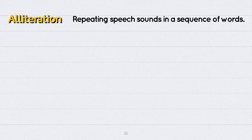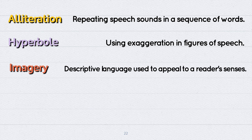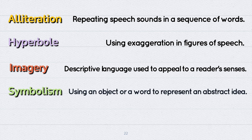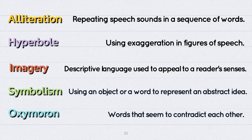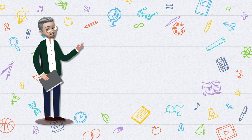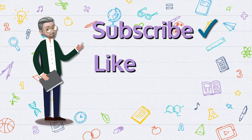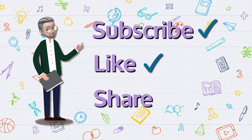So let's recap. Alliteration: repeating speech sounds in a sequence of words. Hyperbole: using exaggeration in figures of speech. Imagery: descriptive language used to appeal to a reader's senses. Symbolism: using an object or a word to represent an abstract idea. Oxymoron: words that seem to contradict each other. That's it for today. If you have any questions about literary devices, please post them under the video. If you haven't subscribed to my channel, please do. If you liked the lesson, please hit the like button. You may share the video with your friends if you want to. Until next time, take care. Bye bye.